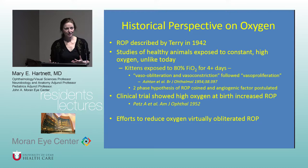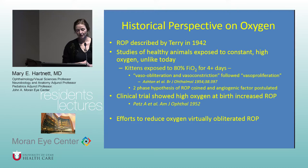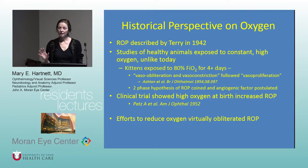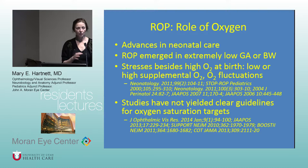Arnold Patz did the first clinical trial comparing normal versus high oxygen at birth and found that high oxygen caused retrolental fibroplasia — ROP. Efforts were then made to reduce oxygen levels, which virtually obliterated ROP, but there were increased problems with neural development. So too low oxygen wasn't good either.